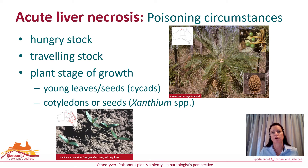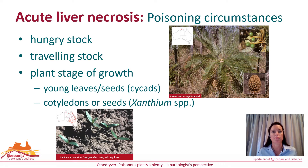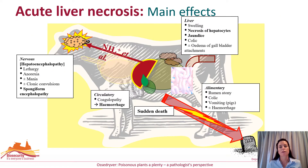Poisoning from plant sources generally involves access by hungry stock, as many of the plants containing hepatotoxins are not very palatable. For some plants the toxins are concentrated into a particular stage of the plant such as young leaves and seeds of cycads or cotyledonary leaves of Nagurubur. Therefore poisoning is more likely to occur when these plant stages are present and ingested in sufficient quantities.